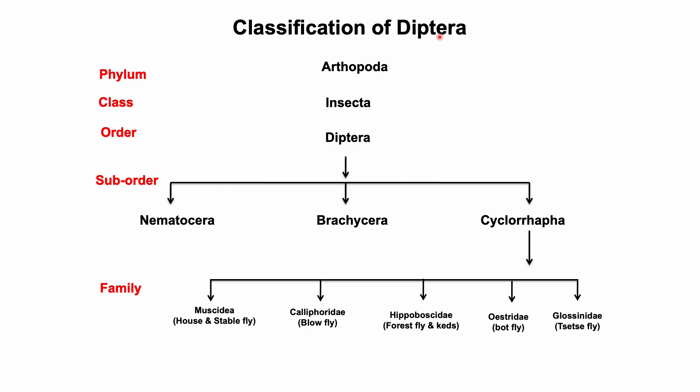This is the zoological classification of different flies. We study veterinary important flies under the suborder Nematocera, Brachycera, and Cyclorrhapha. You can see the different important families under the suborder Cyclorrhapha. In this video lecture we're going to study tsetse fly under the family Glossinidae.